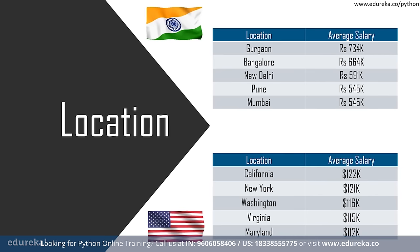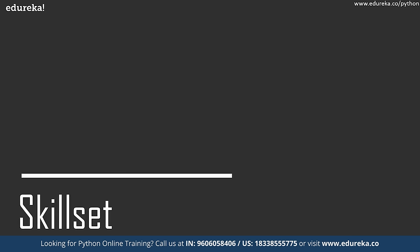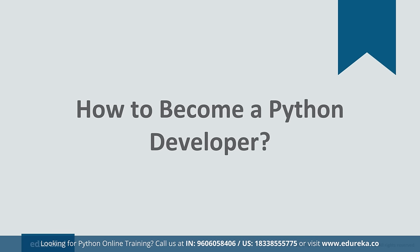In India, the best location for a Python developer is Gurgaon, with an average pay scale of 7.31 lakhs per year. Regarding skill set, having knowledge of Python along with other skills is a crucial factor. According to CV Compiler, the most in-demand skills alongside Python are AWS and Django. The average salary for a Python developer with Django knowledge is about 6 lakhs per annum, which is higher than the general average.